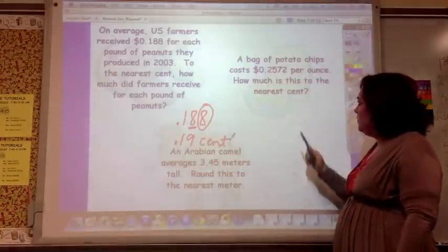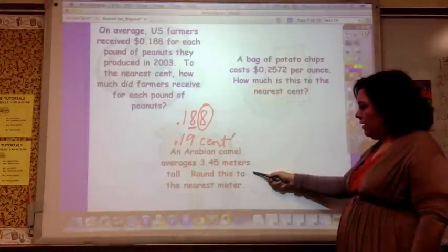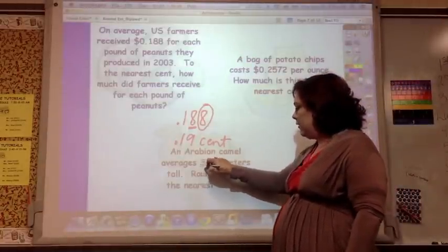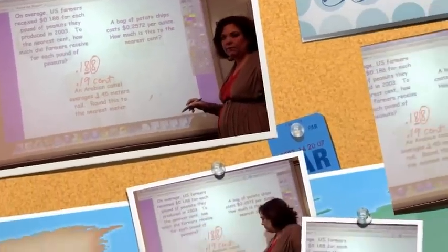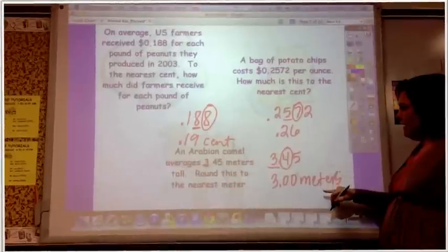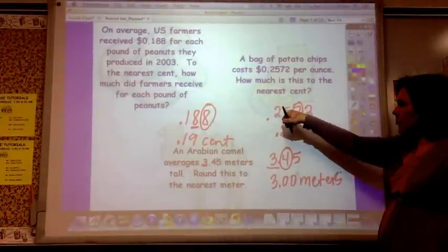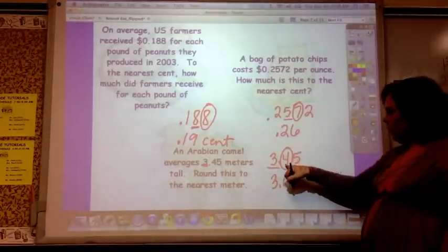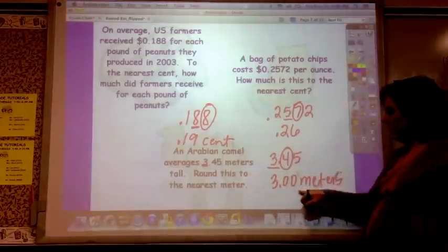So do this one and do this one, nearest meter. This is going to be the nearest meter. So this is going to be twenty-six cents. And so the five, look at the seven. Seven says five go up. So twenty-six cents. And this, the four says to the three, stay the same. So three stays the same. Three meters.